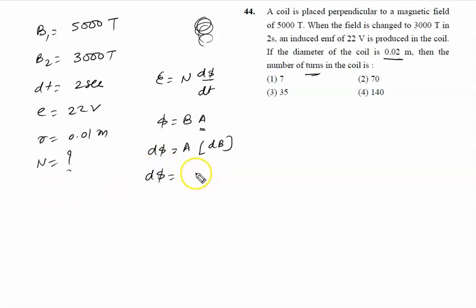dΦ is given by area, that is πr², and r is 0.01 meters or 1/100 meters. So πr² means 1/100 × 1/100, which is 1/10⁴. Change in magnetic field is 5000 minus 3000, that is 2000. So it is π × 2 × 10³ / 10⁴.